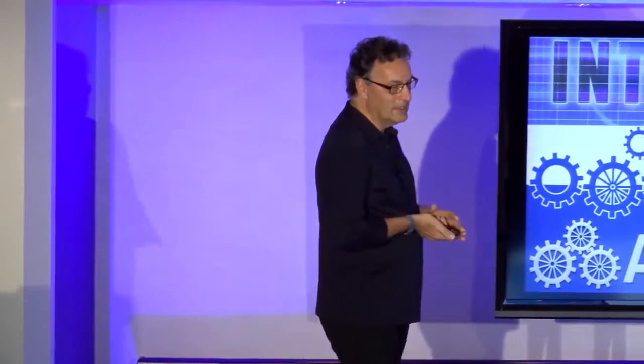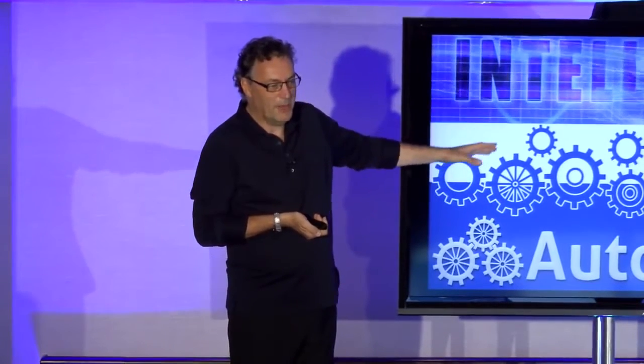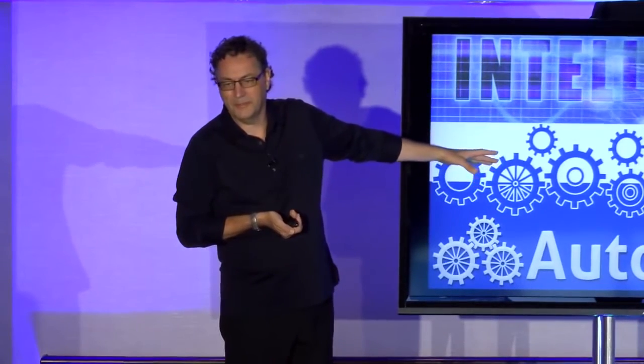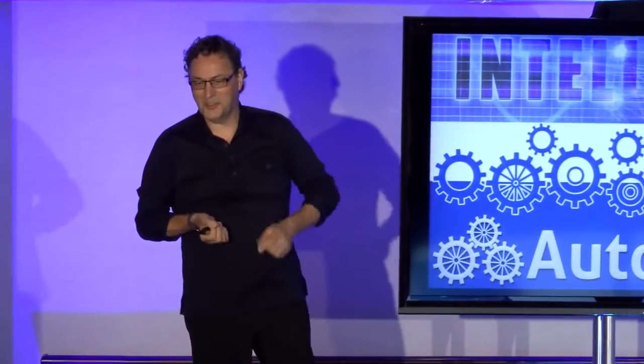There are two major things happening here. One is automation. Anything that can be automated will be automated. That's the law of digital Darwinism.